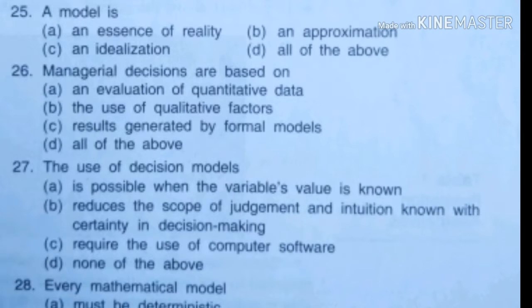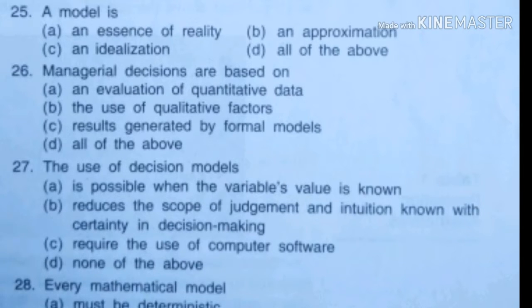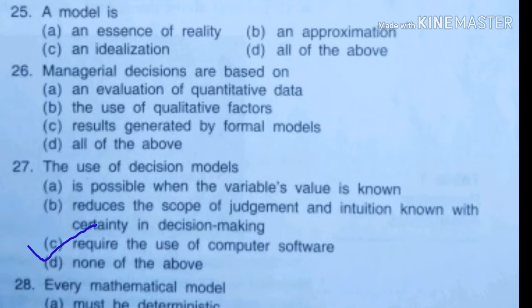Twenty-seven. The use of decision models: A is possible when the variable value is known, option B reduces the scope of judgment and issues known with certainty in decision making, option C requires the use of computer software, or D none of the above. The right answer is D, none of the above.